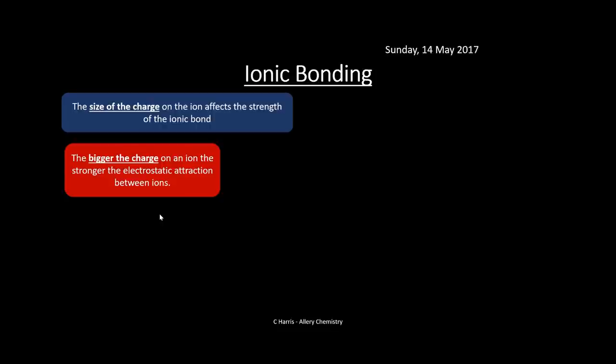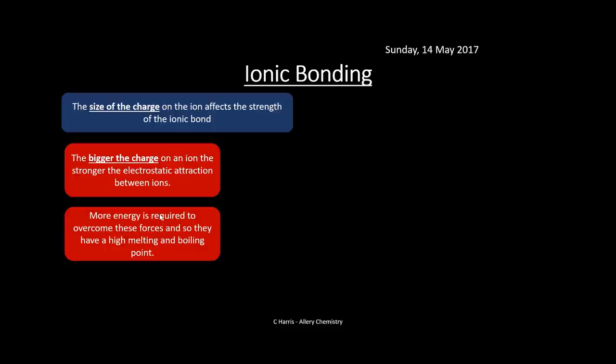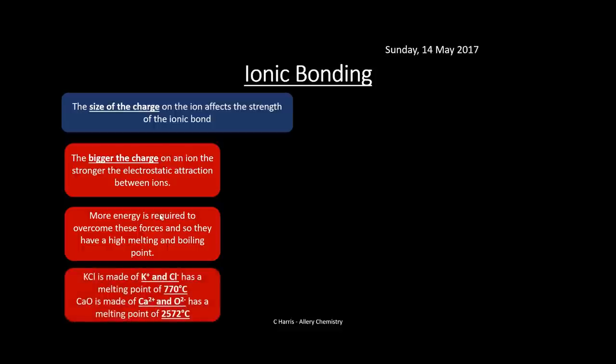The size of the charge on the ion affects the strength of the ionic bond. The bigger the charge, the stronger the electrostatic attraction, so more energy is required and they have higher melting and boiling points. For example, potassium chloride (K+ and Cl-) has a melting point of 770°C, but calcium oxide (Ca2+ and O2-) has a melting point of 2572°C. The bigger charge difference in calcium oxide means a much higher melting point compared to potassium chloride.